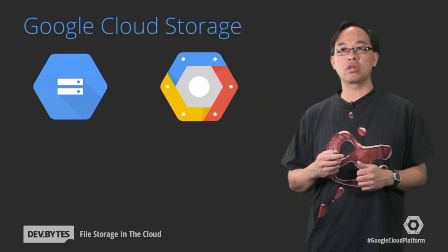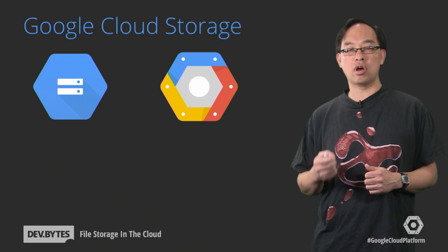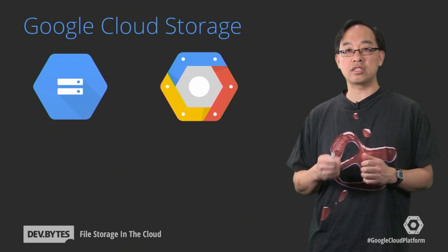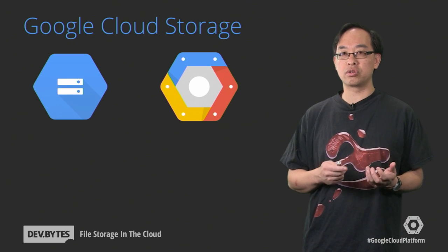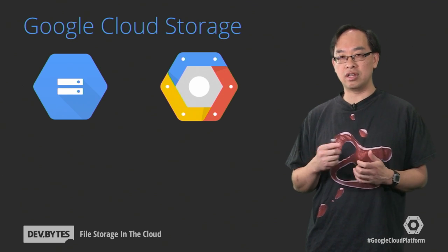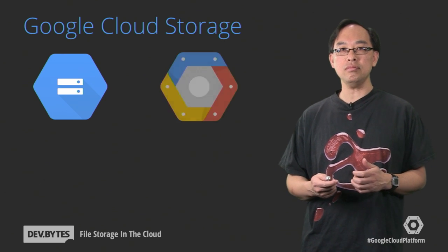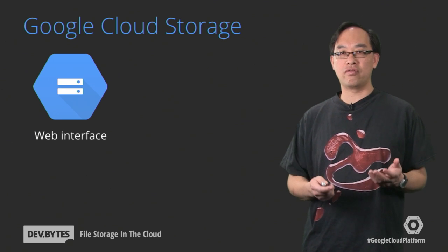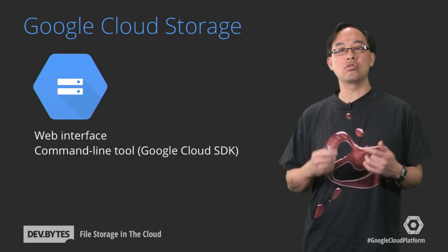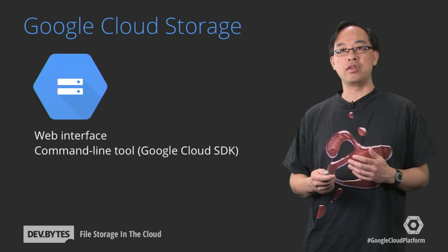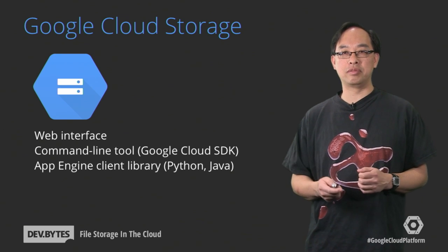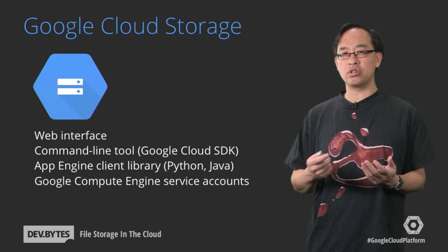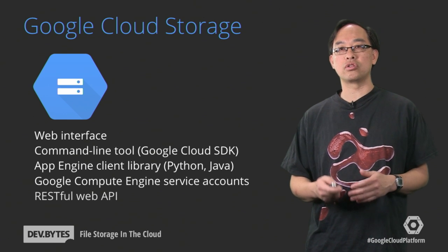Cloud Storage is part of the Google Cloud Platform, where services are provided on behalf of a project or application rather than a user. Also, for some of you, it's critical to specify where your data should be hosted, and Cloud Storage supports that. At this time, you can select either the US or the EU. There are many ways by which you can access Google Cloud Storage: through its web interface, the command line tool which is part of the Google Cloud SDK, by using the App Engine client library for your App Engine apps, from Compute Engine instances using built-in service accounts that access Cloud Storage data within the same project, and the Cloud Storage RESTful API.